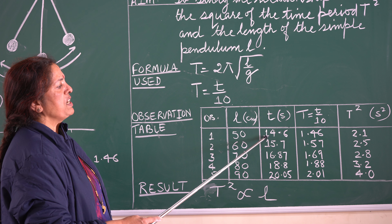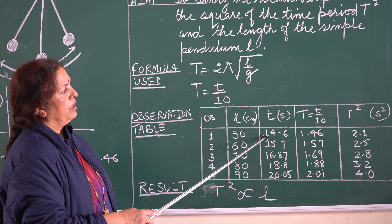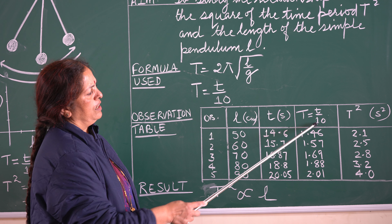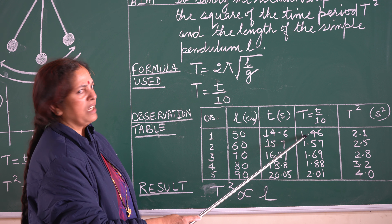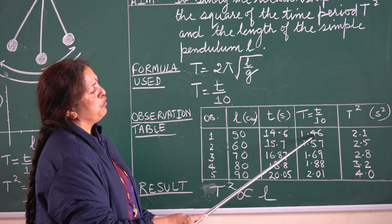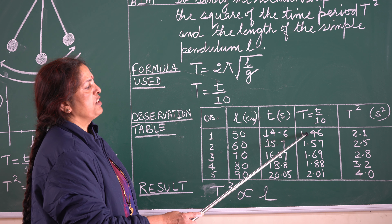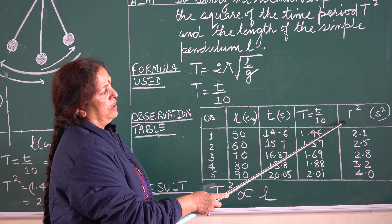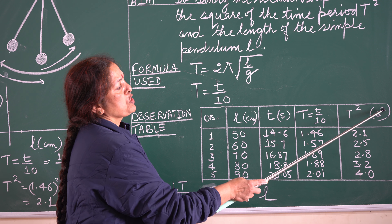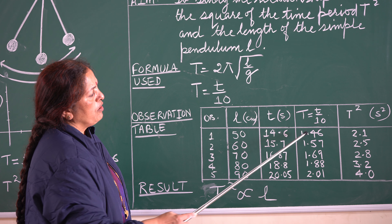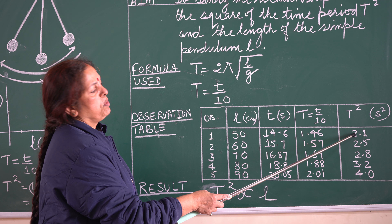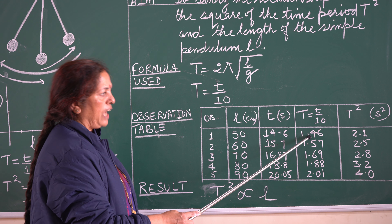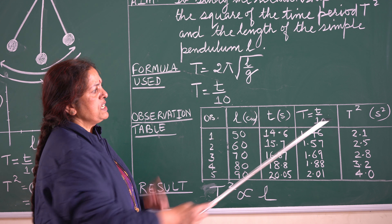In the first reading, let us suppose the reading comes out to be 14.6 seconds. Then in the next column, time period T = t/10. Dividing by 10 is easier, so my reading comes out to be 1.46, since 14.6 ÷ 10 = 1.46. In the last column, I will take the square of the time period, with units of seconds squared. The square of 1.46 is approximately 2.1. So I need: length, time for 10 oscillations, time period, and square of the time period.